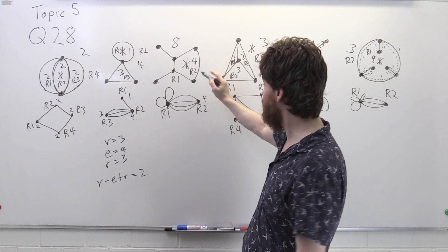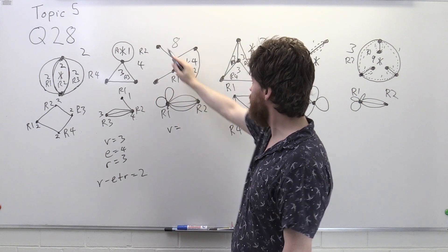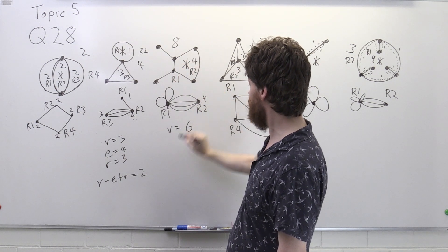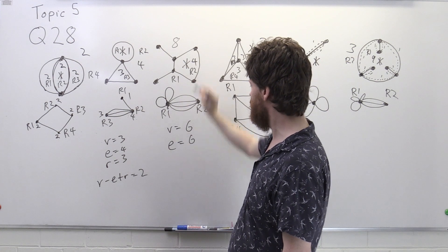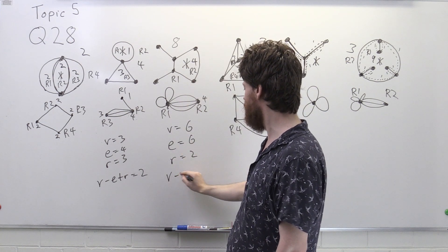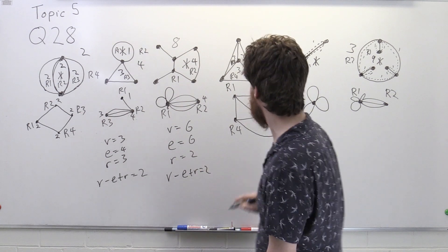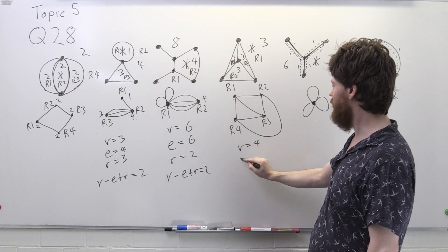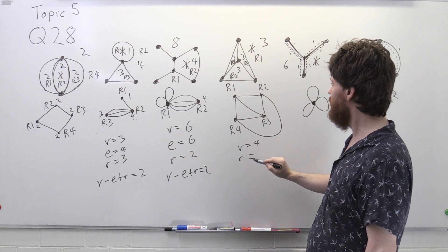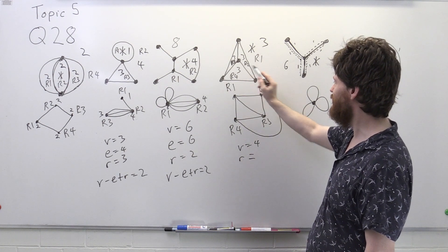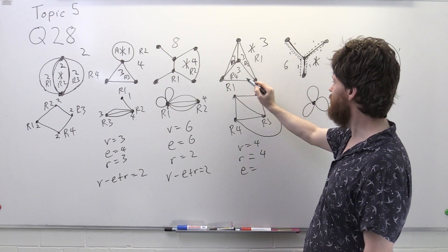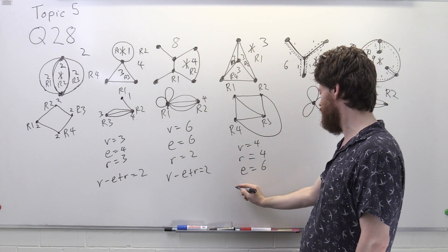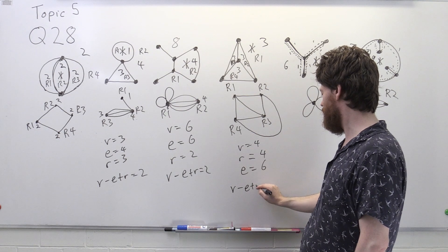For the second original graph: v equals three, e equals four, r equals three, so three minus four plus three equals two. For the third graph: v equals six, e equals six, r equals two, so six minus six plus two equals two. For its dual: v equals four, e equals six, r equals four, so four minus six plus four equals two.